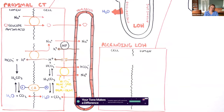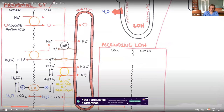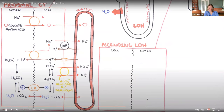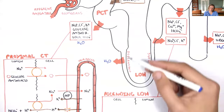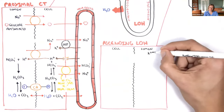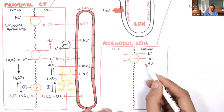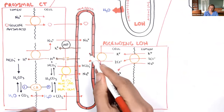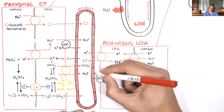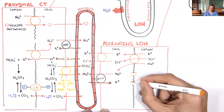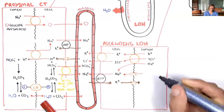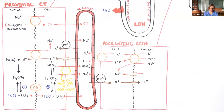[Video] Other electrolytes reabsorbed in the PCT include calcium — the majority of calcium is reabsorbed here. In the ascending loop of Henle, there is a triporter that brings in one potassium, two chloride, and one sodium back inside the cell. Potassium and chloride go through another transporter back into circulation, while sodium gets exchanged for potassium via the Na-K ATPase. On the apical surface of the loop of Henle cells, passive channels allow sodium to enter the cell from the lumen and potassium to enter the lumen from the cell.